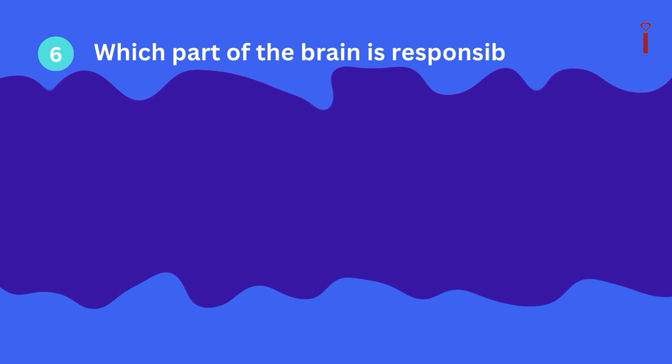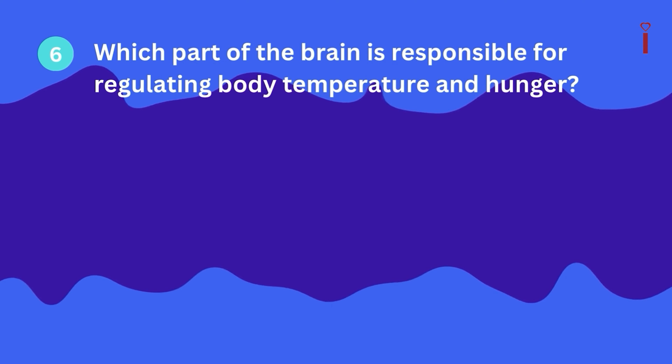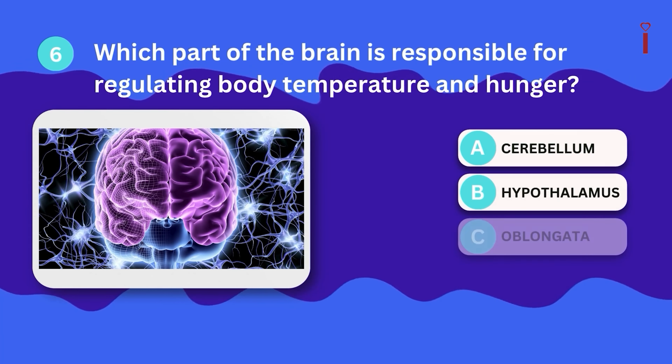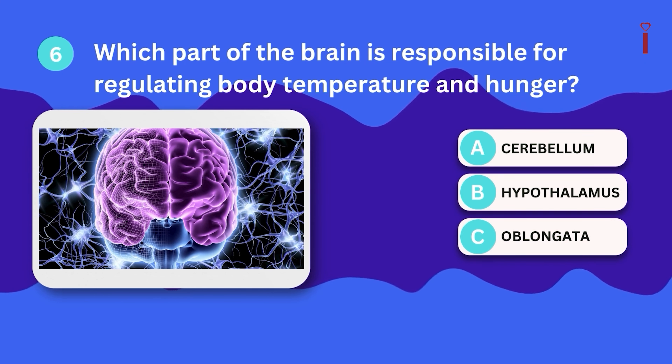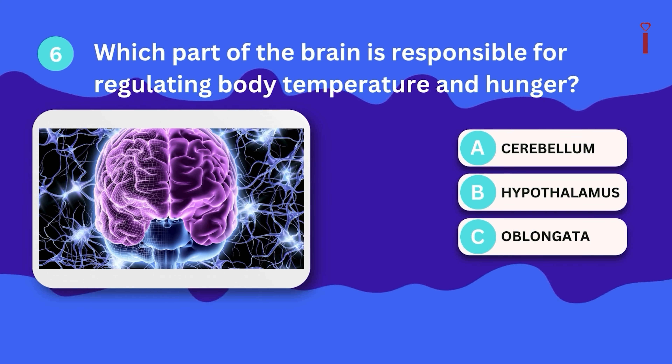Question 6: Which part of the brain is responsible for regulating body temperature and hunger? A. Cerebellum, B. Hypothalamus, C. Medulla oblongata?